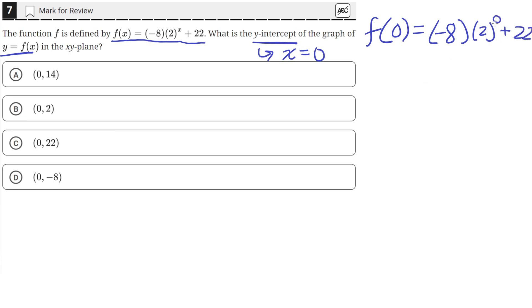So anything raised to the 0th power is just 1. So we'll just have negative 8, since negative 8 times 1 is just negative 8. And then this plus 22. Negative 8 plus 22 is the same thing as 22 minus 8. So that's just equal to 14.